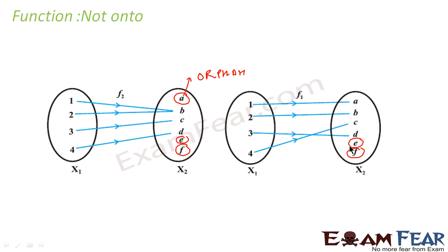Classifying these functions as one-one or many-one: B has two injections coming in, so it is not injective — it is many-one. Here, all values A, B, C, D have only one value coming in, so it is one-one.